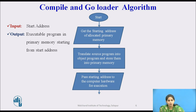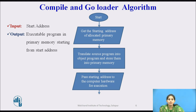Suppose the starting address of the allocated primary memory is A. Then the source program PS is translated into the object program PO by the compile and go loader. The object program PO is stored into the primary memory starting from address A. After the translation, the address A is stored into the memory address register or the program counter for execution.